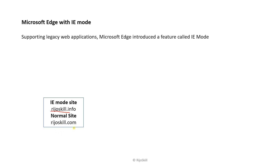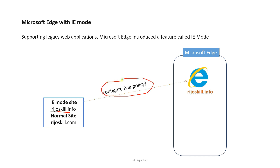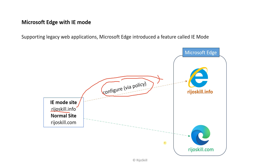In your organization, there is one website, rejoskill.info, which only opens in IE mode. Another site, rejoskill.com, opens normally in Edge. So users who need to access rejoskill.info in IE mode will need a policy configured. Once configured, typing rejoskill.info will redirect to IE mode, while other sites render normally in Microsoft Edge format.